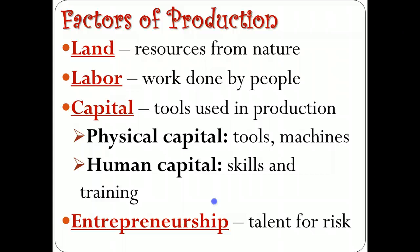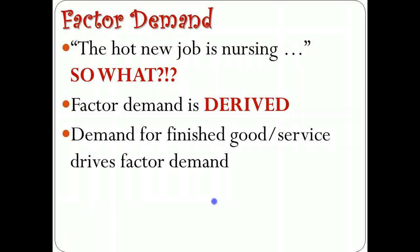For land and capital, the factor price is the rental rate — we'll talk more about that in a couple of days. For labor, it's the wage rate. The factor price is important because it helps determine what the demand is for each of these factors of production.